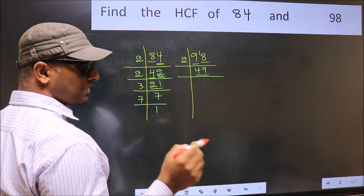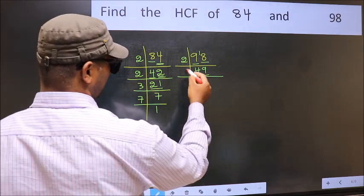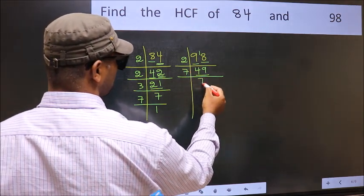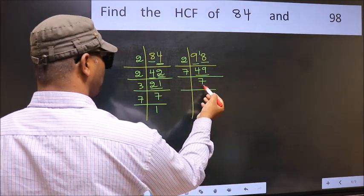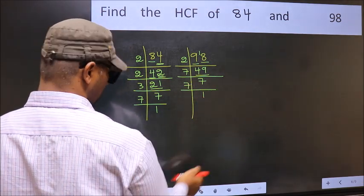Now we have 49. Always remember 7 times 7 is 49. Now 7 is a prime number, so 7 times 1 is 7.